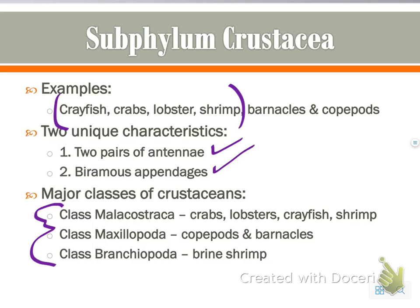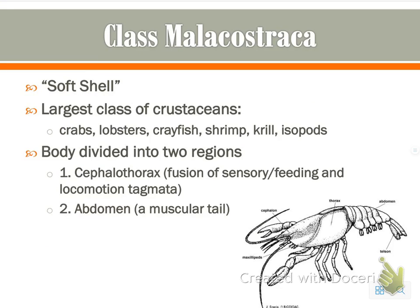Class Malacostraca includes crabs, lobsters, crayfish, and shrimp, and is the class we will be dissecting. They're known as having a soft shell — they don't have a super hard outer shell, but they do still have an exoskeleton. They are the largest class of crustaceans. The body is divided into two regions: similar to spiders, they have a cephalothorax — the head and thorax fused — and then the abdomen.